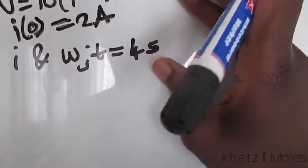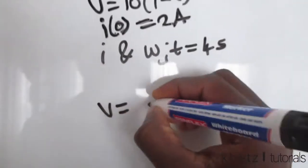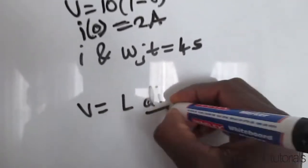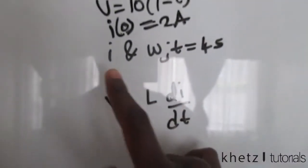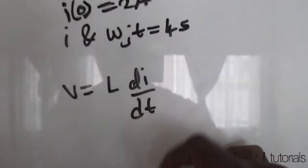So we know for sure that v is equals to L di divided by dt, and the first part asks us to find the current. So what we'll do is we just cross multiply and integrate.